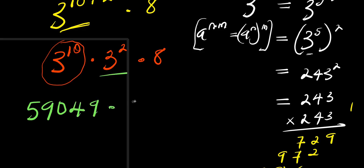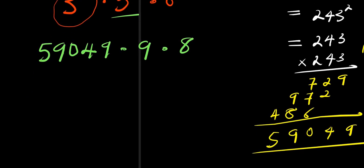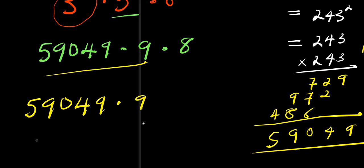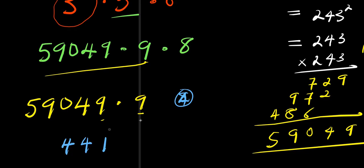So we have 59,049 times three to the power two, which is nine, times eight. Let's start by multiplying 59,049 by nine. Carrying out the long multiplication step by step: nine times nine is 81, nine times four gives 36 plus carry, nine times zero gives 4 after carry, nine times nine gives 81, and nine times five gives 45 plus carry gives 53. This gives us 531,441.